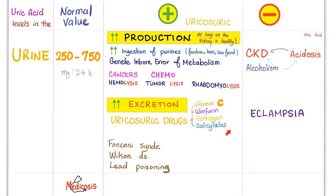For aspirin, you need to determine: is it low dose or high dose? High-dose aspirin is good for gout — partly because it's anti-inflammatory, and also because it's uricosuric, increasing uric acid in the urine.